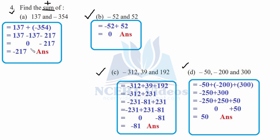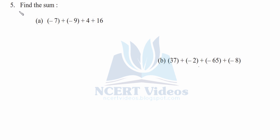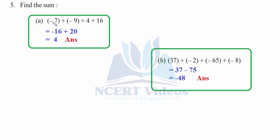Question five: find the sum. Part a: minus seven plus minus nine plus four plus sixteen. Signs for minus seven and minus nine are the same, so add them: minus 16. For the positives, sixteen plus four gives twenty. Now minus sixteen plus twenty: signs are different, subtract and take the sign of the bigger number — plus four. We don't write the plus sign, so the answer is 4.